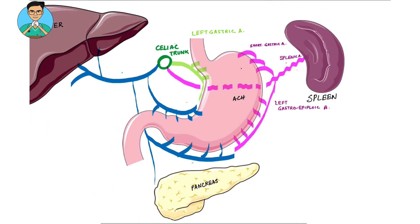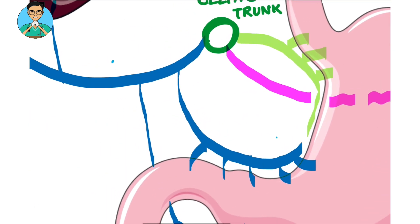Now we come to the third branch of the celiac trunk, the blue one. This artery given off by the celiac trunk is known as the common hepatic artery.